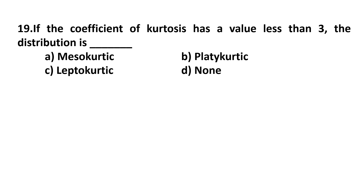Question 19. If the coefficient of kurtosis has a value less than 3, the distribution is: mesokurtic, platykurtic, leptokurtic, or none.